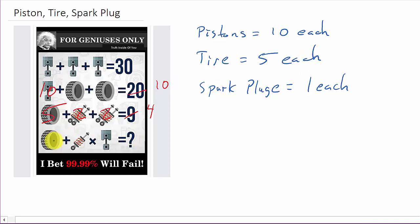So we've got a tire, which is 5, plus a spark plug, which is 1, times a piston, which is 10. And we need to know what does that equal.